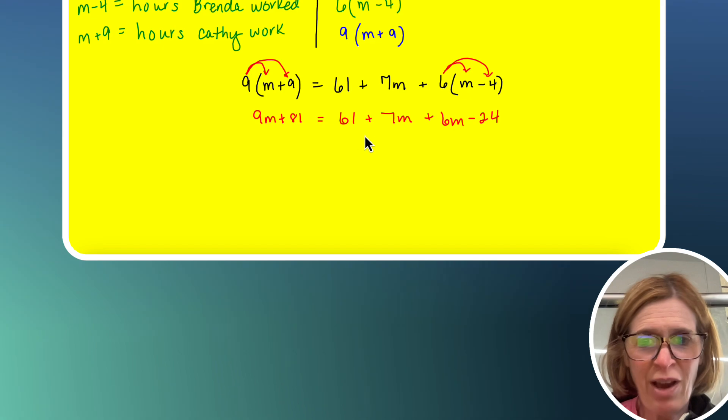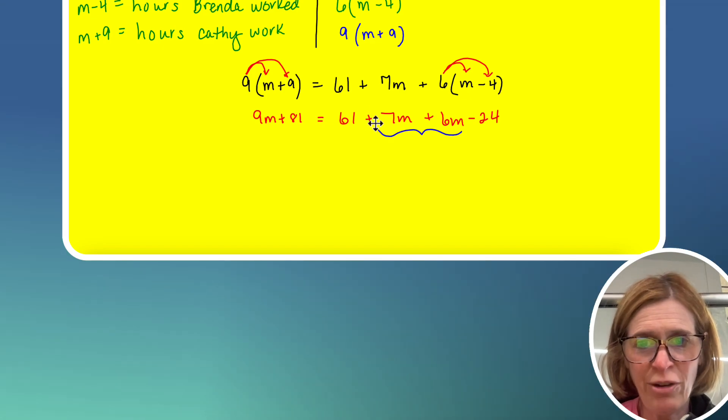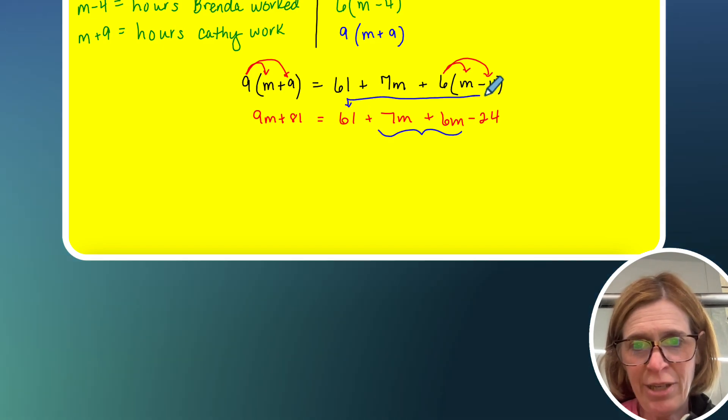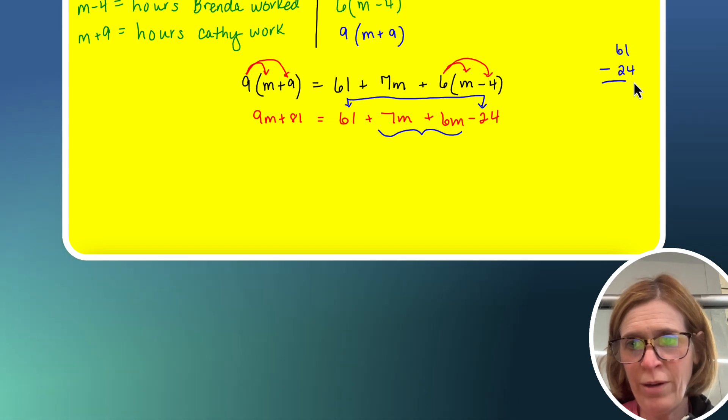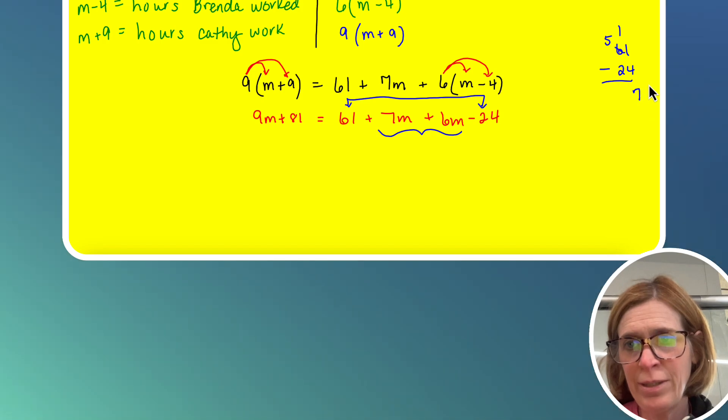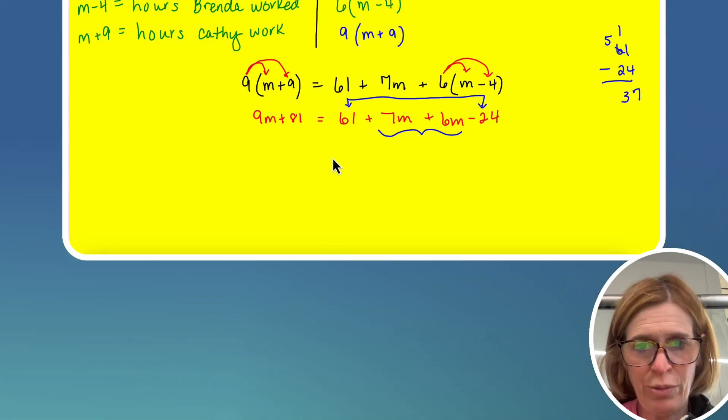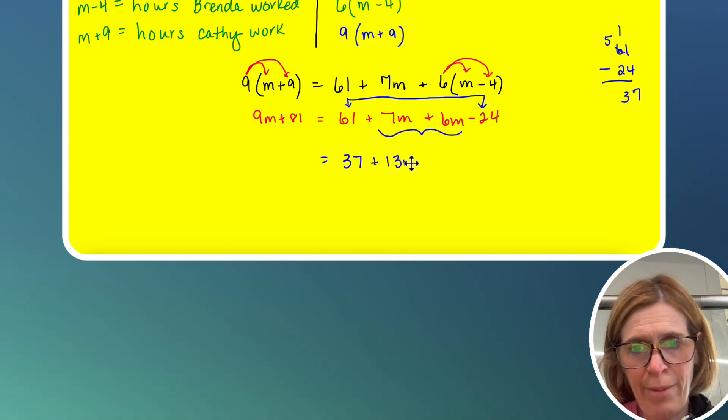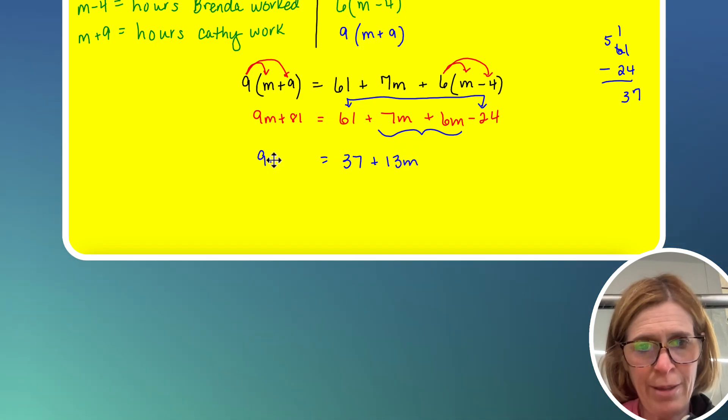Alright, so now we've got to combine like terms here and here, so 61 minus 24 is 37. So 37 plus 13M equals 9M plus 81.